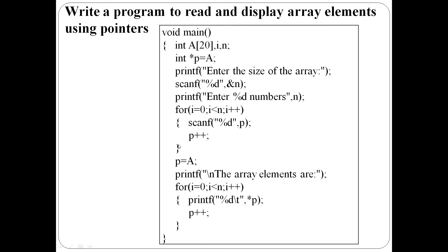Inside the for loop, n elements are read one by one. Read operation is complete. Again, p equal to a — reset pointer to array starting point. Then, to display array elements, use a for loop with i equal to 0, i less than n, n elements to display. For the first iteration, p points to a[0]. Print star p — the content of a[0]. Then p is incremented to point to a[1].